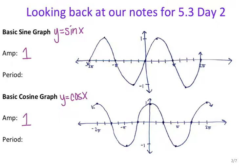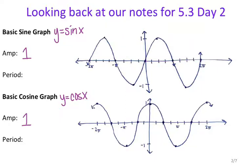Amplitude can never be negative because it's talking about a distance. Now for the period, the period of a trig function is the length that it takes to go through a full cycle. If we look at the sine graph, this portion matches up with this portion — they're basically the same exact thing. The length that it takes to repeat is 2 pi, so the period for sine is 2 pi.